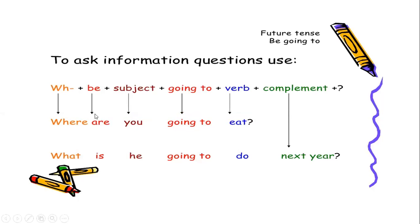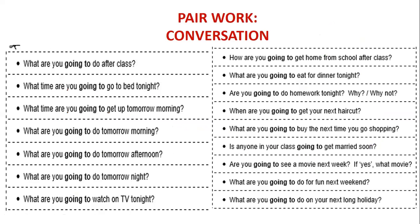Let's look at the structure again in a more visual way. To ask information questions we use: WH words — where, what, or any other — plus the verb to be (is, am, or are), plus the subject (I, you, he, she, it, we, they), plus going to as a helping verb, plus the main verb. For example: 'Where are you going to eat?' — ¿A dónde vas a comer? 'What is he going to do next year?' — ¿Qué va a hacer él el próximo año? That's the time to work.